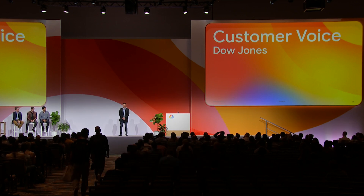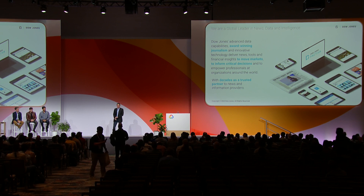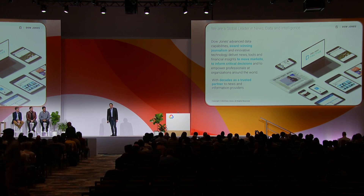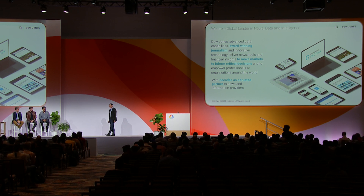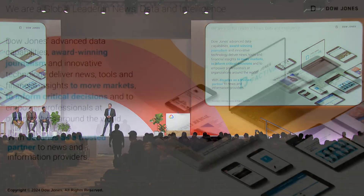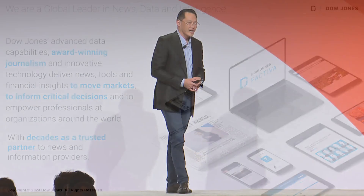For those not familiar with Dow Jones, we are a global news and information provider. We pride ourselves on our award-winning journalism and delivering trusted news, information, and data to customers and organizations around the world. We do this through our B2B products — Factiva, Newswires, Risk and Compliance, Opus, and CMA — and to consumer subscribers through the Wall Street Journal, MarketWatch, Barron's, and Investor's Business Daily. In this session, I'm going to talk about Factiva and our partnership with Google. Factiva is our leading business intelligence and research product. It's been in market for over 20 years, we partner with over 33,000 trusted sources in over 30 languages, we have an archive of 2.5 billion documents dating back to the 1940s, and we process between half a million and a million new pieces of information every single day.